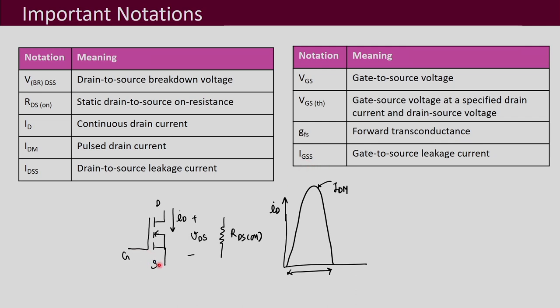There may also be some leakage current associated with gate-to-source. During the turn-on process there is a gate current, and while it turns off there is also some current. But while the MOSFET is conducting, or while the gate-to-source is off, during that period we expect no current to be flowing in the gate region, but there is a small current — and that is the gate-to-source leakage current.